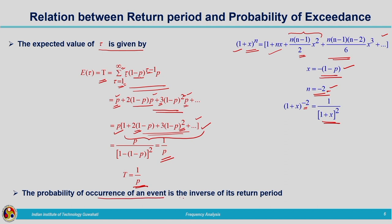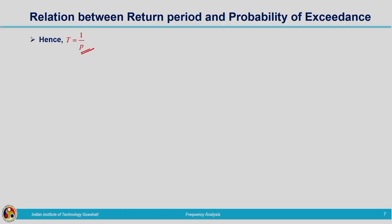The probability of occurrence of an event is the inverse of the return period: T = 1/p, where T is the return period and p is the exceedance probability. If we have a data series we can compute the probability of occurrence and then find the return period or recurrence interval by taking the inverse. This is the fundamental relationship between return period and exceedance probability: T = 1/p.